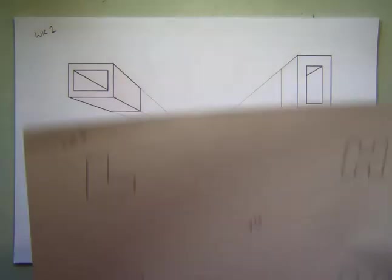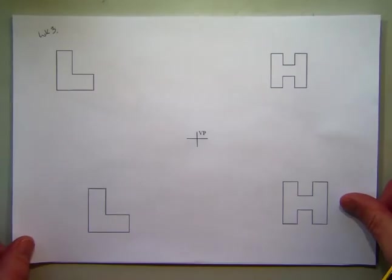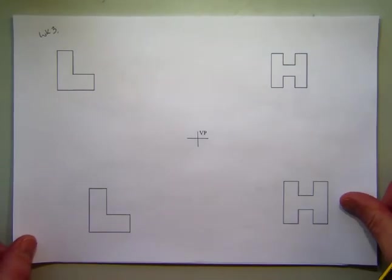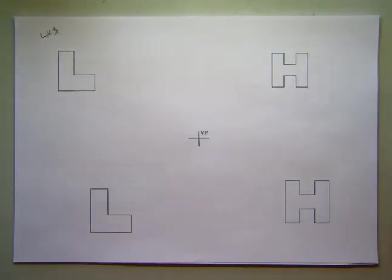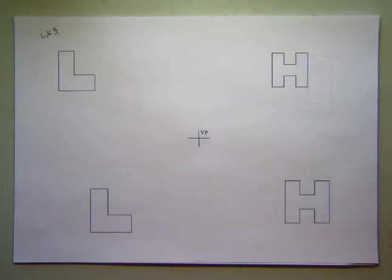So in week 3, today's lesson, what we're going to do is take it a little bit further and think about adding more shape, instead of just squares. Week 3 is going to be these letters — an L and an H. Then next week we'll progress a little bit further with another couple of shapes. And then in week 5, we'll look at how you're trying to do your full name in perspective.